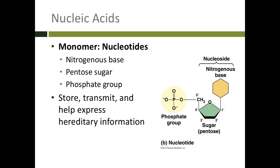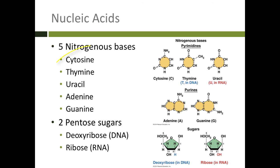Our next set of macromolecules is nucleic acids. The monomer here is a nucleotide. A nucleotide is a nitrogenous base, a sugar, and a phosphate group. Nucleic acids' job is to store and express hereditary information. There are five different nitrogenous bases: cytosine, thymine, uracil, adenine, and guanine. We'll talk about those later.